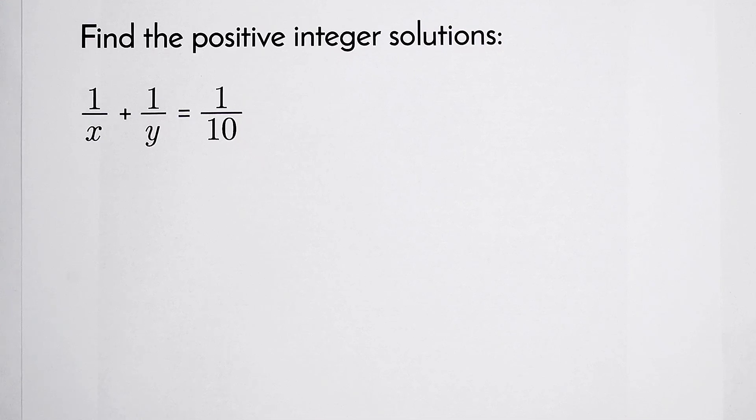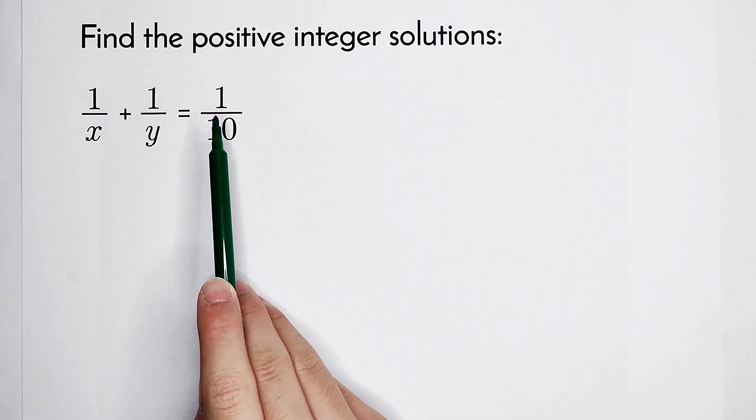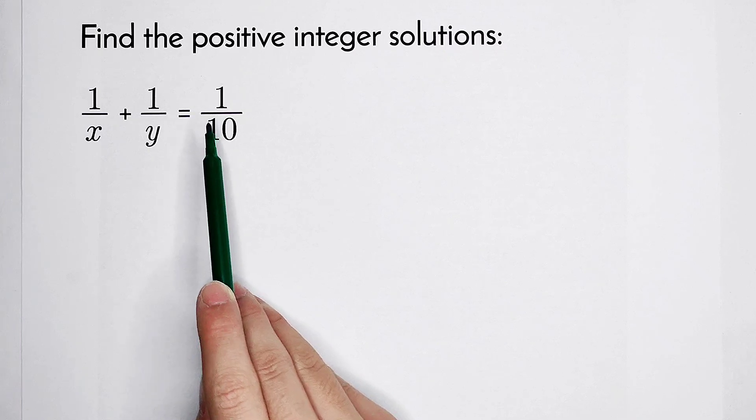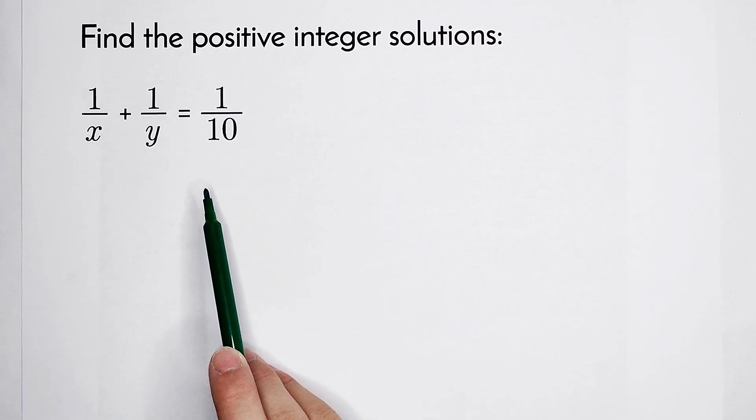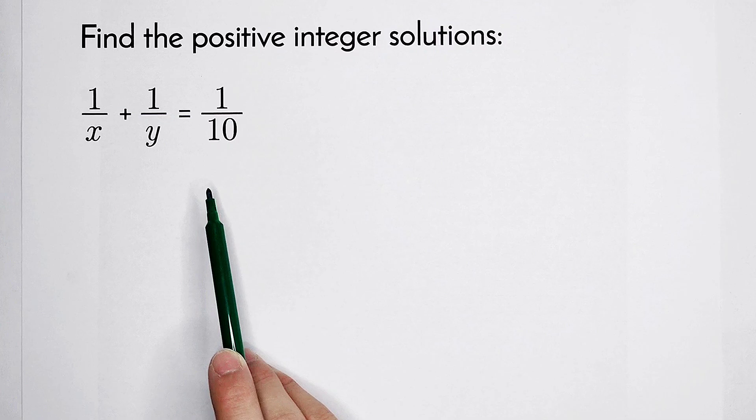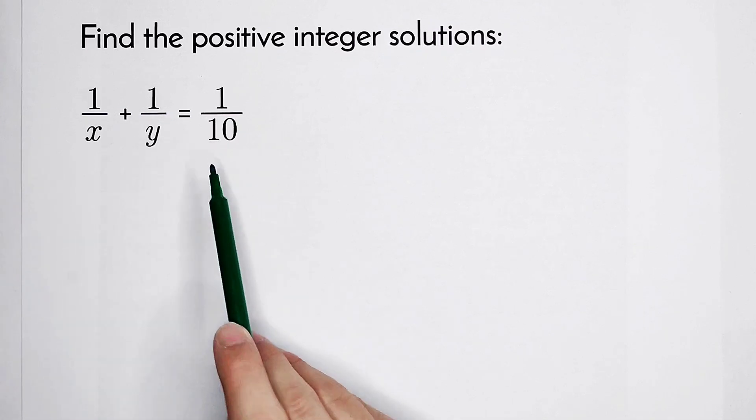First, let's have a look at the numerators. The numerators have the same value, 1, so easy. And what about the denominators? The denominators are x, y, and 10.